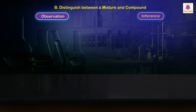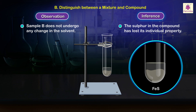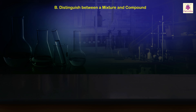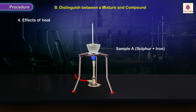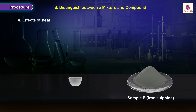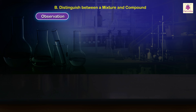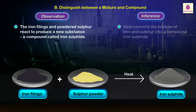For Sample B with carbon disulfide, the sulfur in the compound does not dissolve — it has lost its individual property. Procedure to distinguish on the basis of effects of heat: a part of Sample A was already heated to prepare the compound iron sulfide, so it is not necessary to heat the mixture again. Observation: iron filings and powdered sulfur react to produce iron sulfide. Heat converts the mixture of iron and sulfur into the compound iron sulfide.